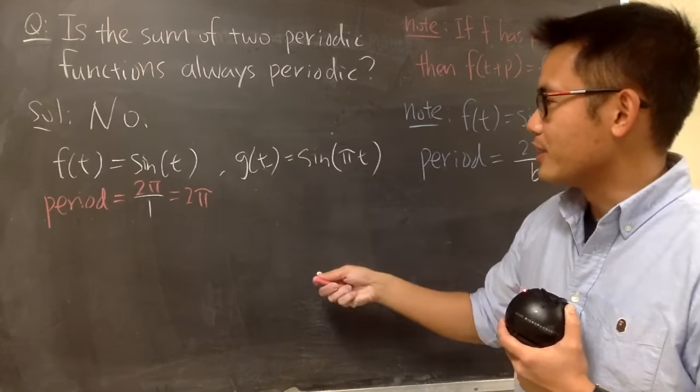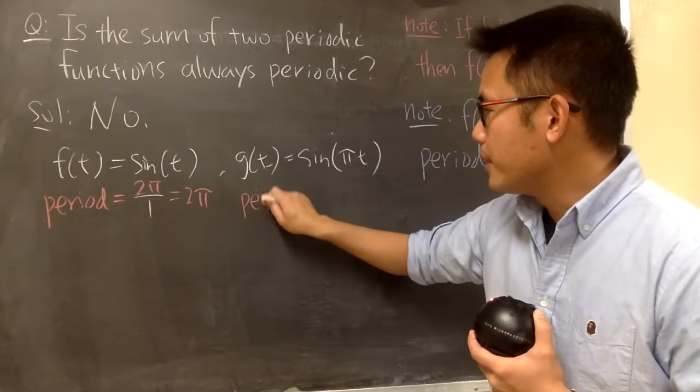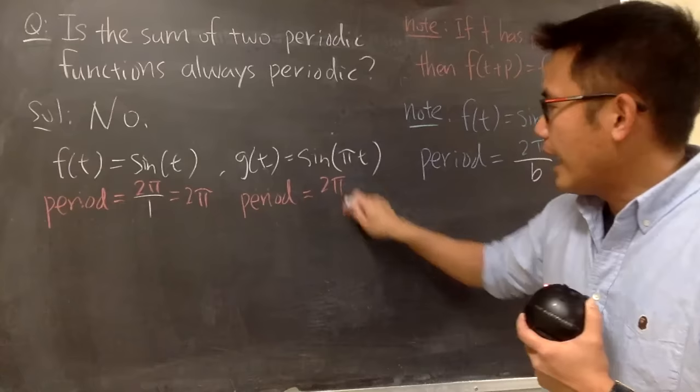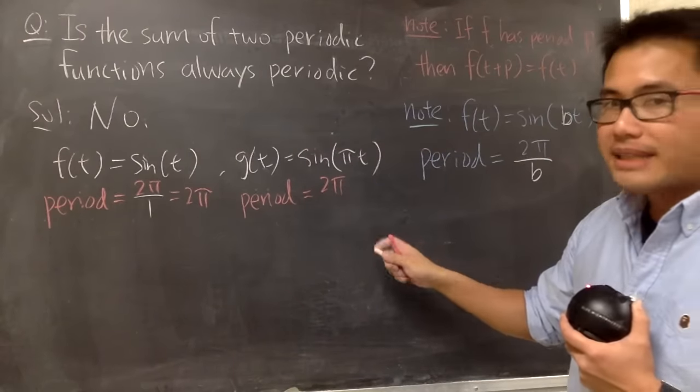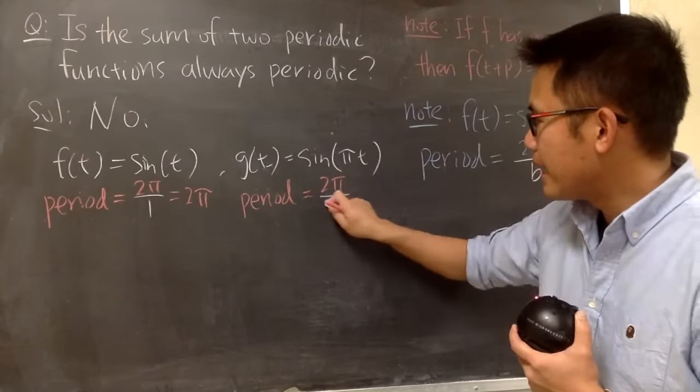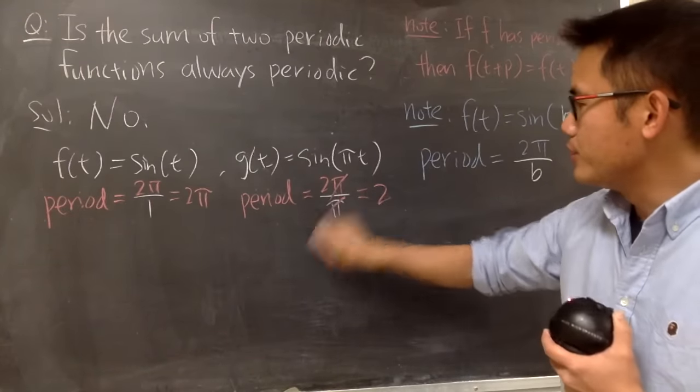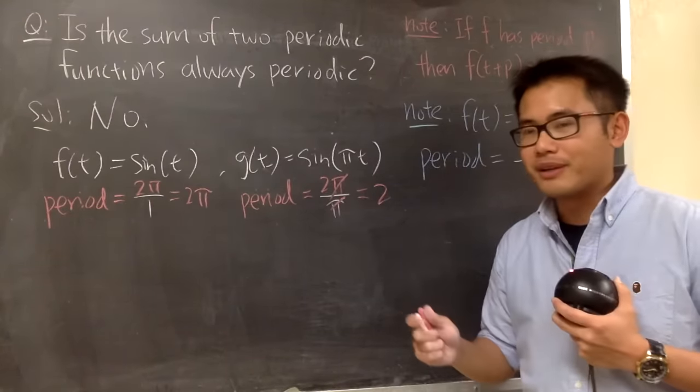But anyway, let me just write this down for you guys to be legitimate. The period of this function is equal to, I still do 2π, but I will have to divide it by this π. So, after all that, we just get 2 for this period right here.